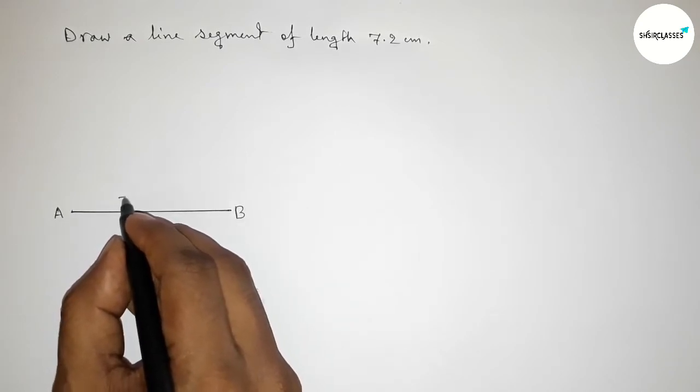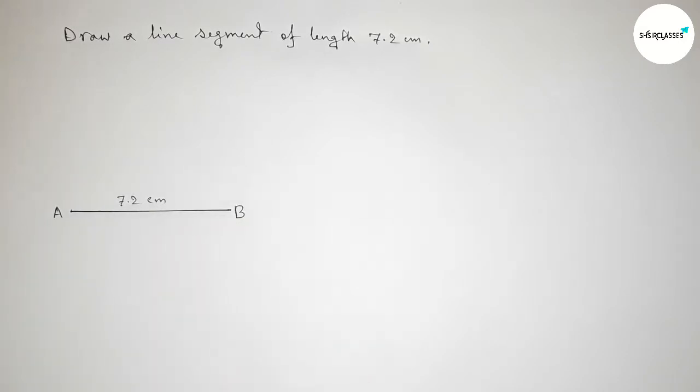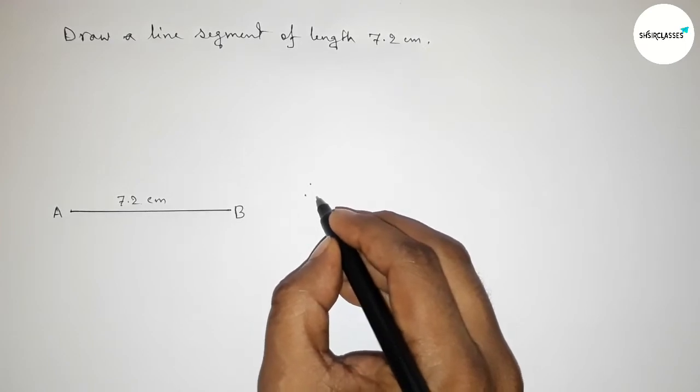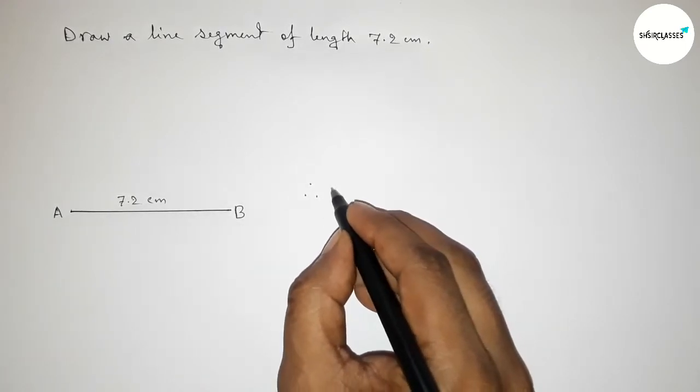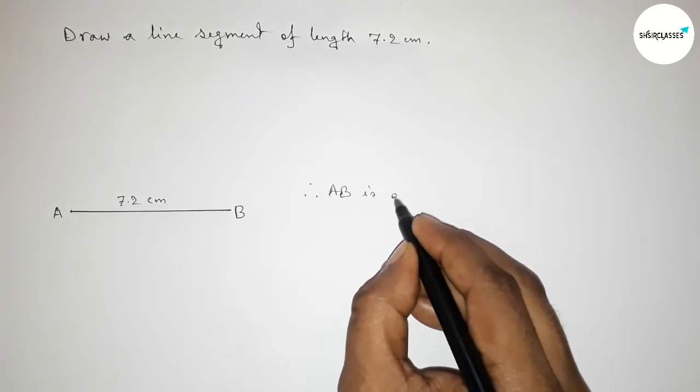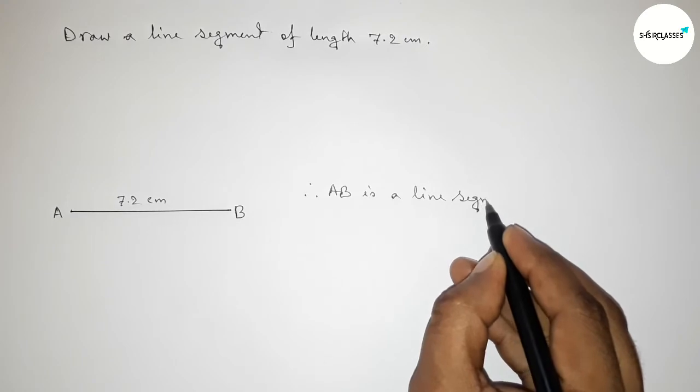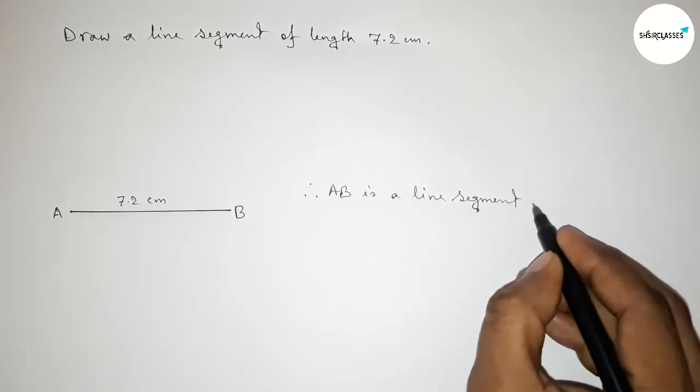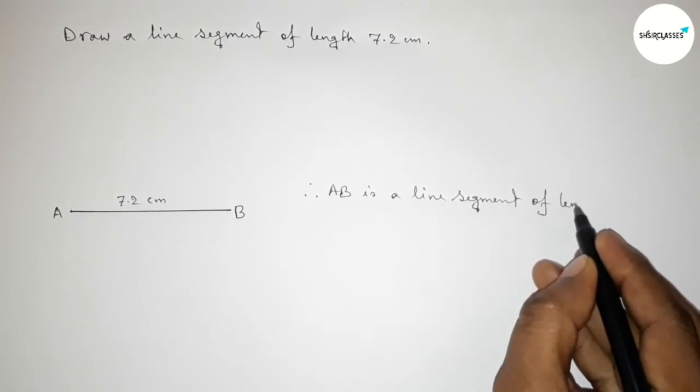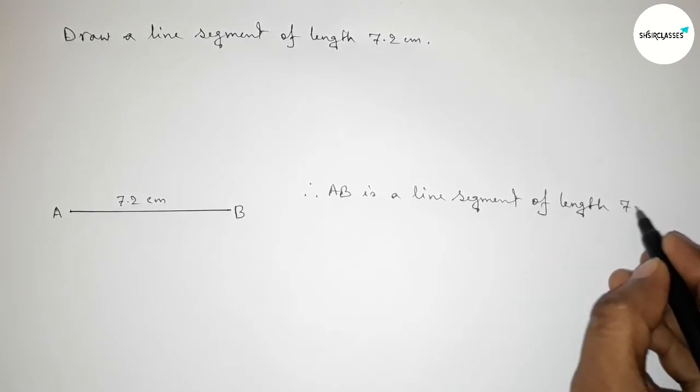So AB is a line segment of length 7.2 centimeter. Therefore, we can say that AB is a line segment of length 7.2 centimeter, and with the help of a scale, you can draw this line in this way.